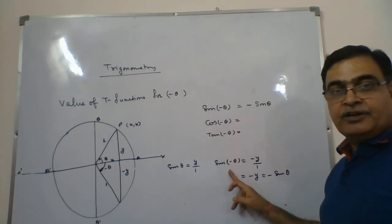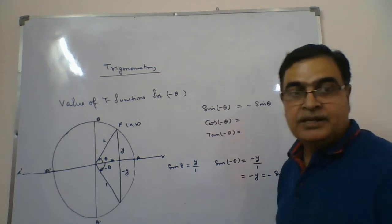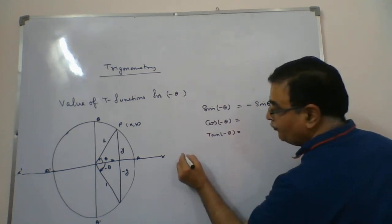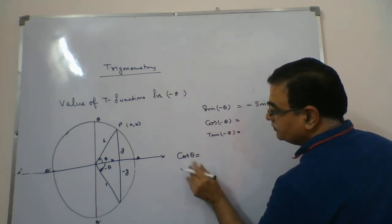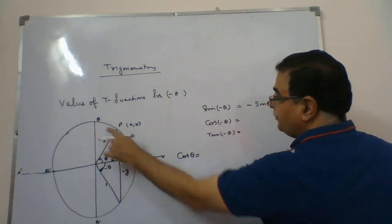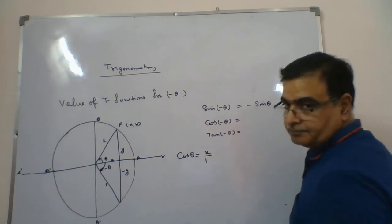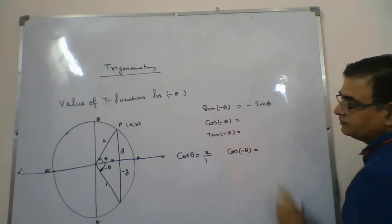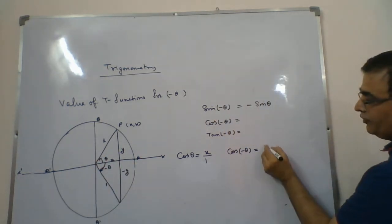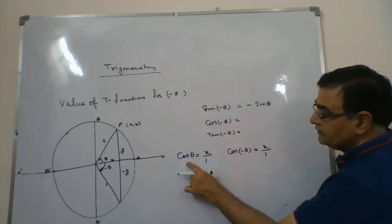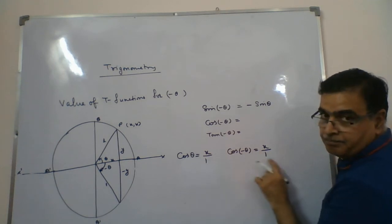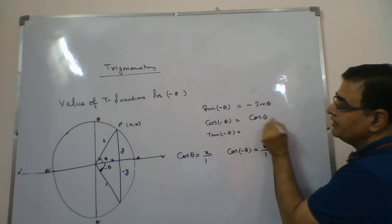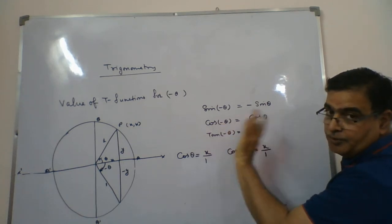So the first result: sine of minus theta equals minus sine theta — the minus sign goes out. Now the second result: for cos of the same triangle, cos theta equals base over hypotenuse, which is x by 1. For cos of minus theta, the base is again x — no negative case — divided by 1. So cos theta and cos of minus theta are the same; cos of minus theta equals cos theta, and the minus is removed.